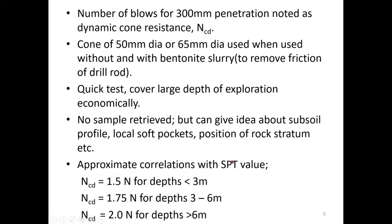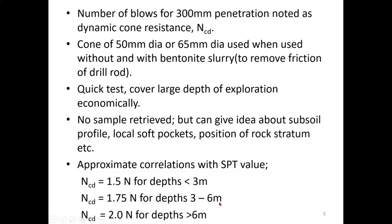Since no sample is retrieved, the test is very fast and can give an idea about the subsoil profile, local soft soil pockets, and position of the rock stratum. Another advantage is you can correlate NCD with SPT values: NCD equals 1.5 times N for depths less than 3 meters, 1.7 for depths 3 to 6 meters, and 2N for depths greater than 6 meters. These N values can be further correlated to different soil properties using empirical relations.